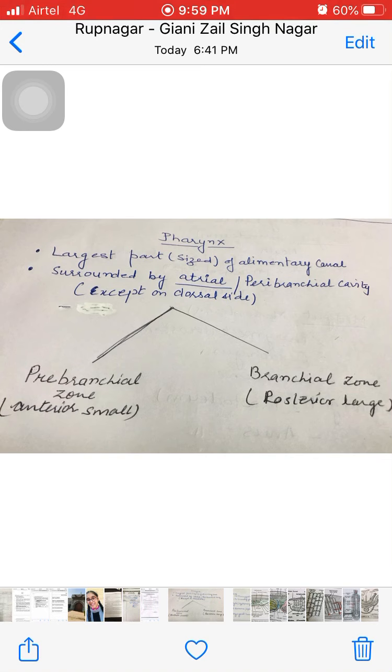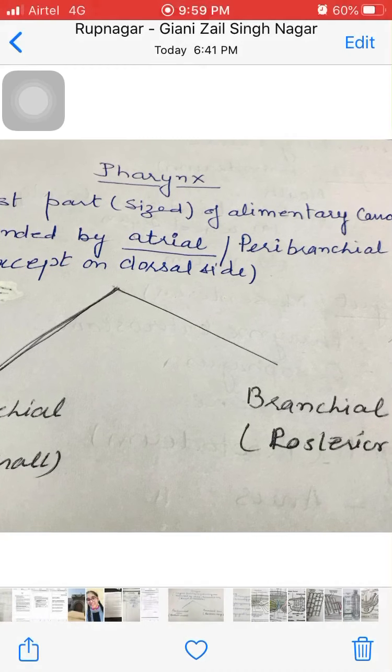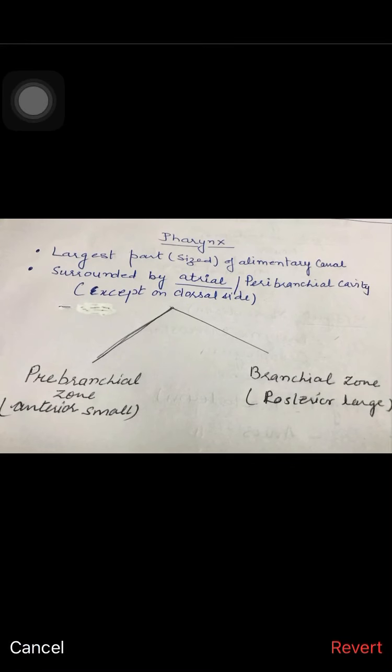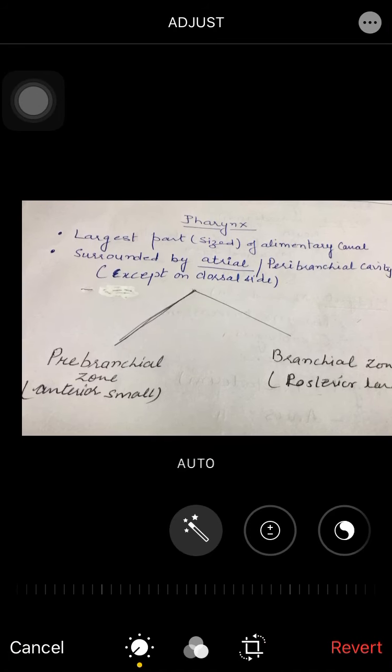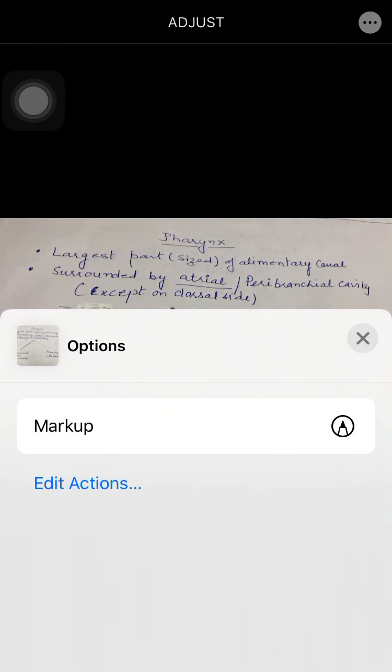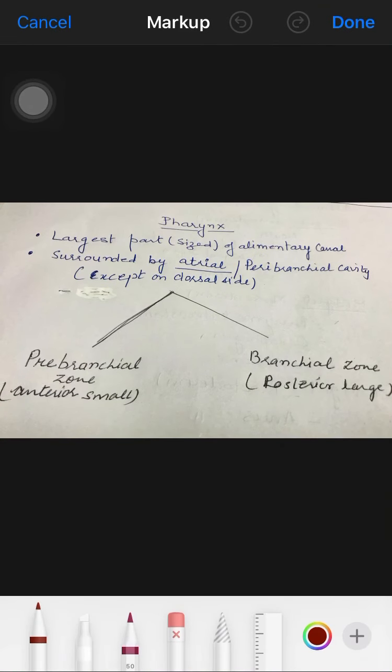We start with the next topic of the digestive system, that is pharynx. The pharynx is the largest part of the alimentary canal. Another important thing about the pharynx is it is a bilaterally compressed tube with a complicated structure.